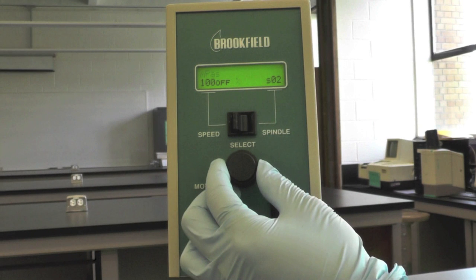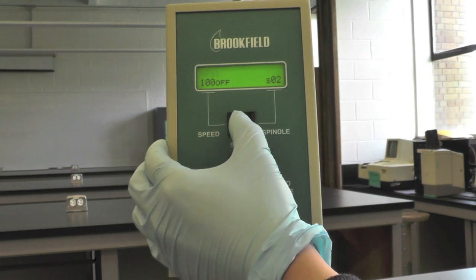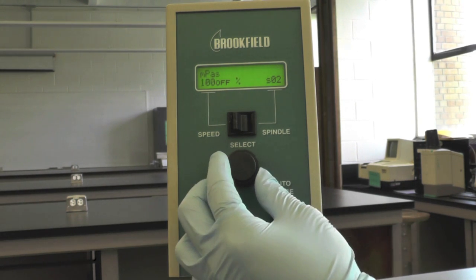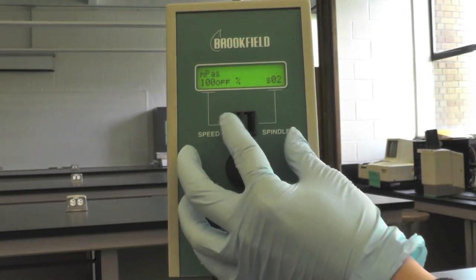To change the speed of the spindle, flip the switch to speed and turn the wheel to make adjustments. When done, flip the switch back to the middle.